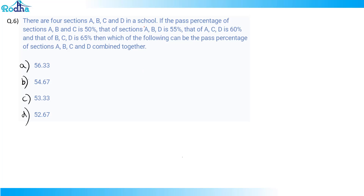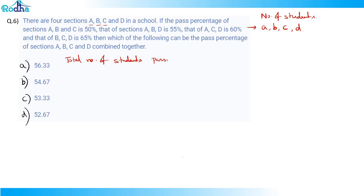There are four sections A, B, C, and D. Let the number of students in each section be a, b, c, and d respectively. The total number of students passing through sections A, B, and C equals 50%, so I can write: (a + b + c) × 0.5. This is my first equation.